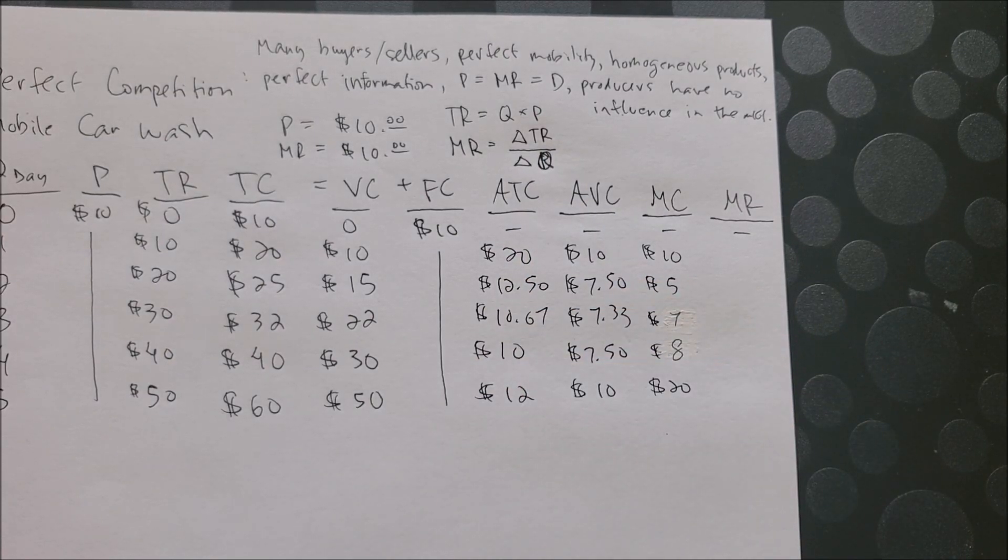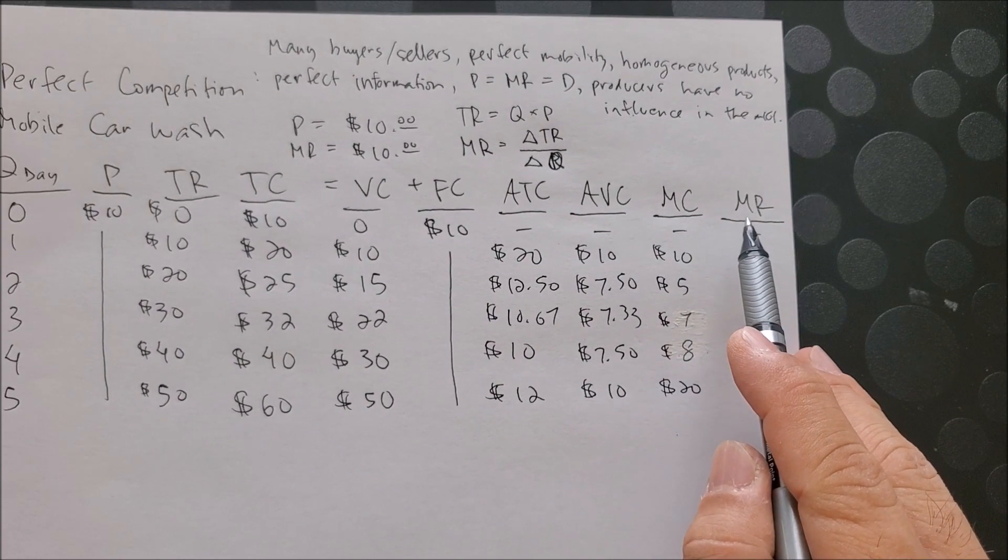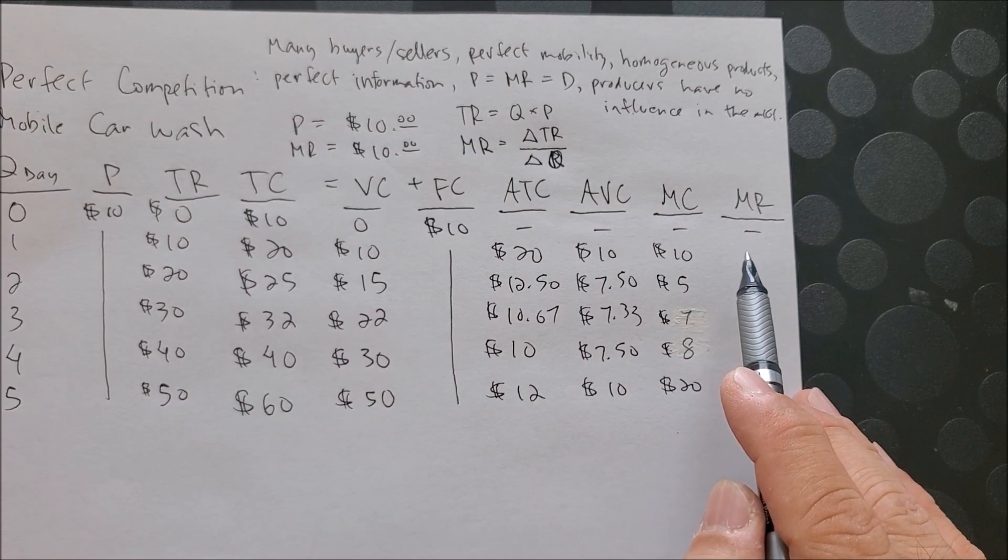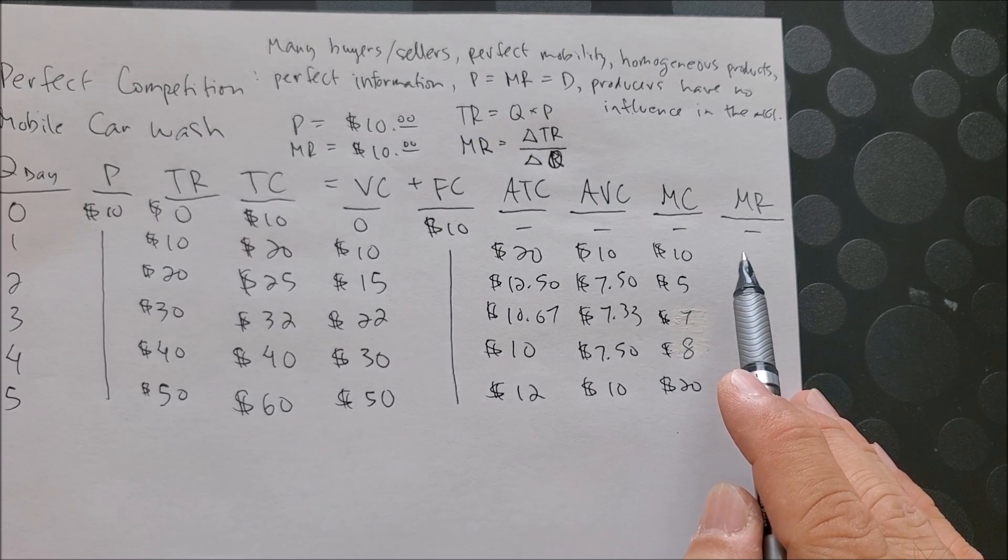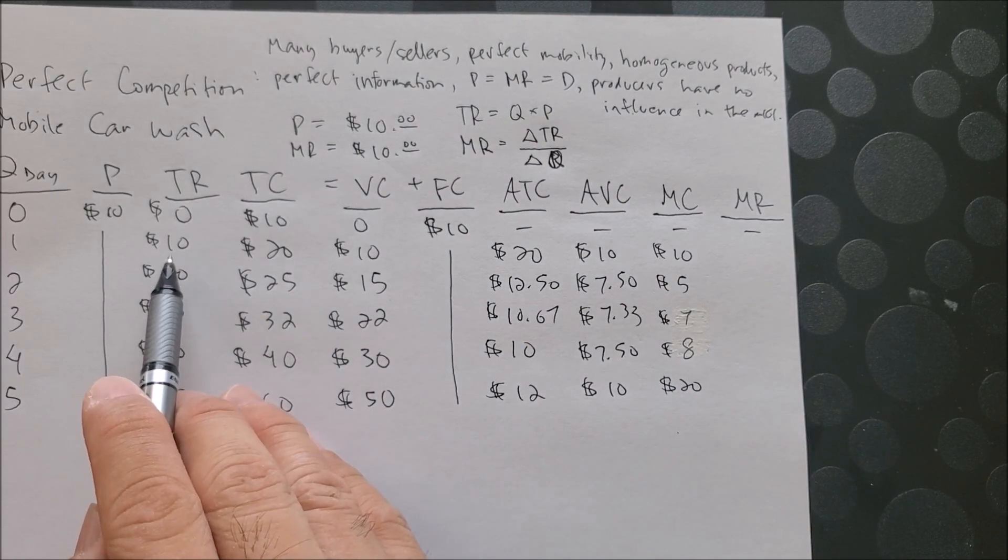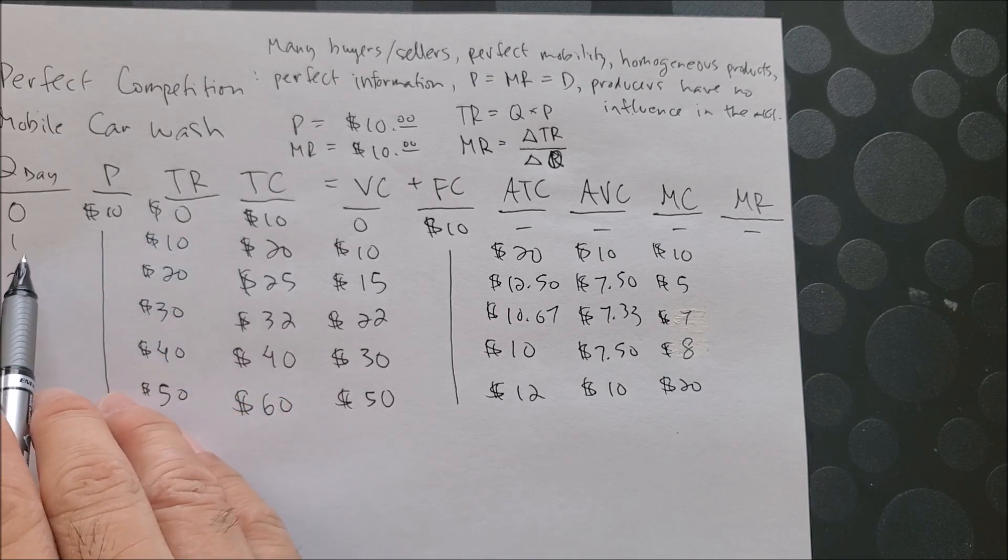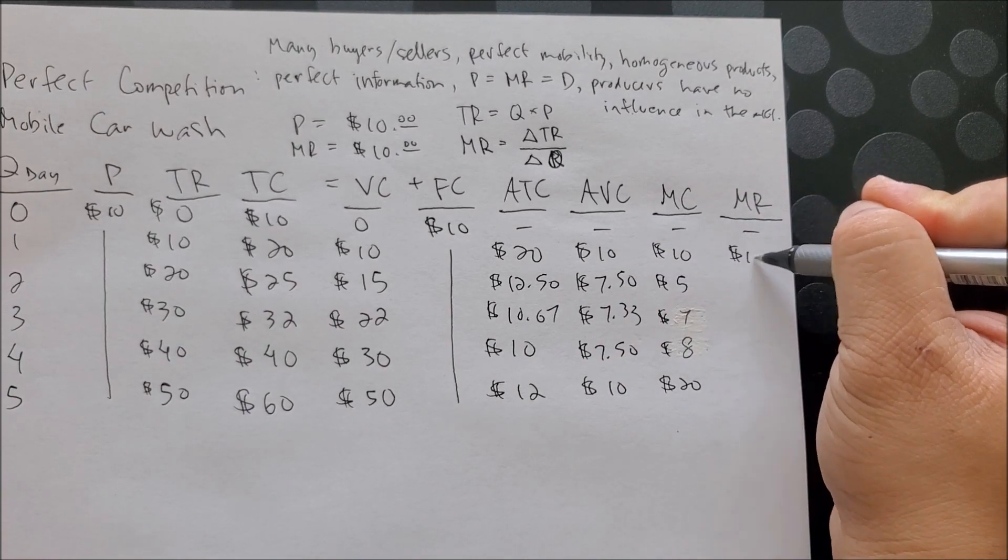And if we are to do that, we can then look at MR where we have at zero quantity, zero cars washed - there's no change. But from zero to one there is a change, so now we can look at total revenue, which would be ten minus zero over one minus zero, and that will give us ten dollars.